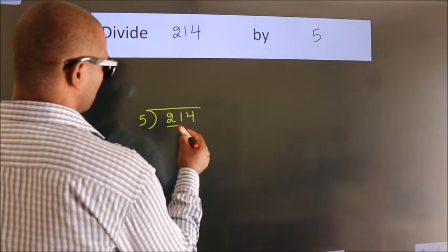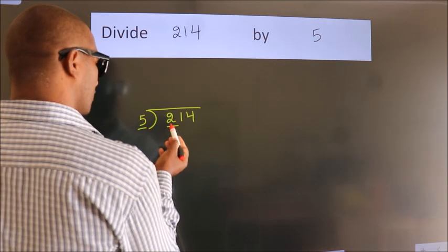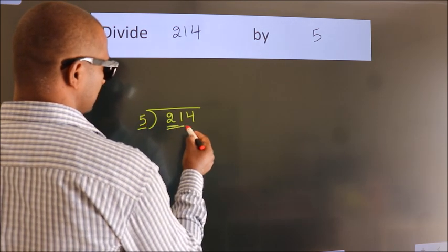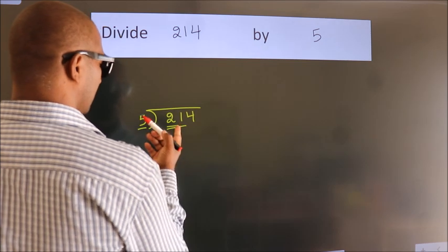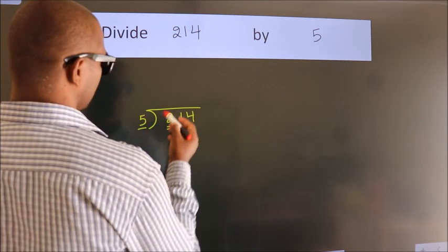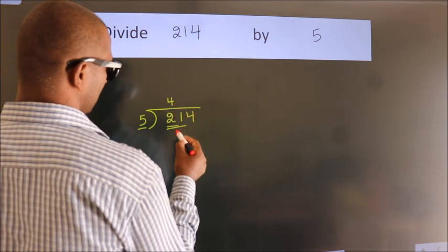Here we have 2. Here 5. 2 smaller than 5. So we should take 2 numbers. 21. A number close to 21 in the 5 table is 5 fours, 20.